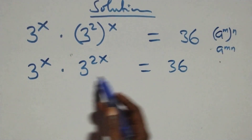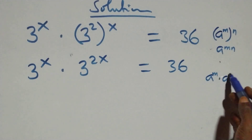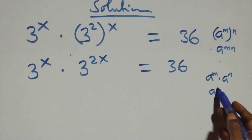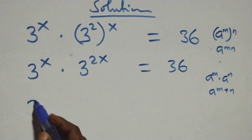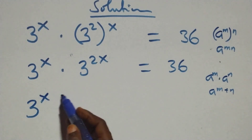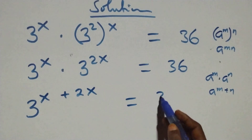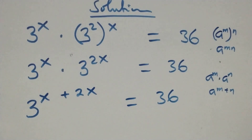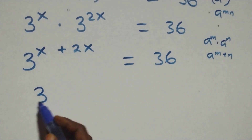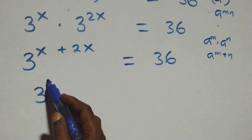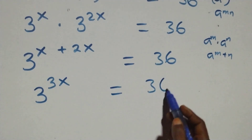The next step here also follows when we have a raised to power m times a raised to power n — this is the same thing as a raised to power m plus n. So we can write it as 3 raised to power x plus 2x equals 36, and x plus 2x simplifies to 3x, giving 3 raised to power 3x equals 36.